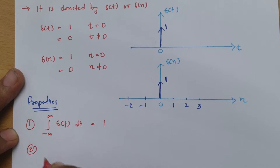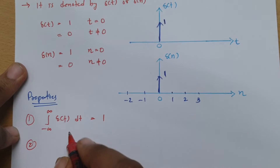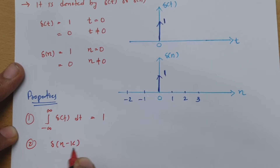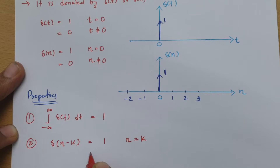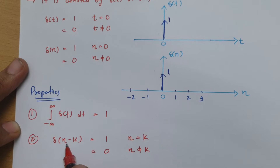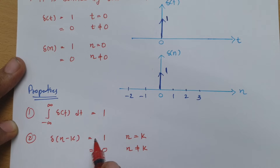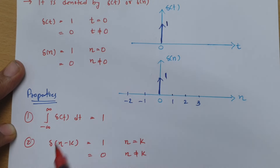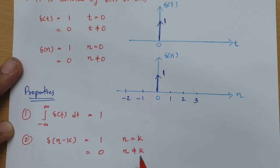The second property is about shifting. If you shift the impulse, then only at that shifted position will there be a magnitude. For example, for δ(n − k), it will be 1 at n = k and 0 at n ≠ k. So while δ(n) is 1 at n = 0, the shifted version δ(n − k) is 1 at n = k and 0 elsewhere.